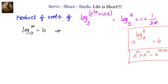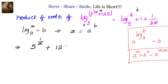Let us change this to exponential form and write x equals a to the power b. Here, the left side expression is x, the base is a, and the right-hand expression is b. So what we get is: 5 to the power of (1/x + 125) equals a to the power of b.